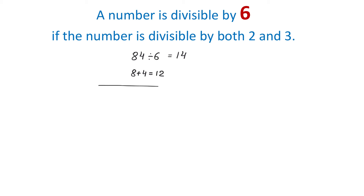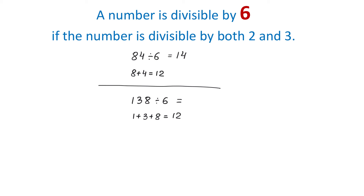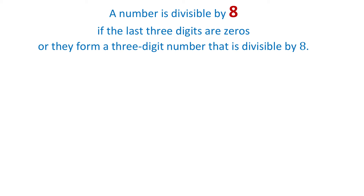Let's see one more example. The number 138 is divisible by 6 because this number is divisible by both 2 and 3. This number is divisible by 2 because it ends with 8. And it is also divisible by 3 because the sum of the digits 1, 3, and 8 gives us 12, and 12 is a number that is divisible by 3. Therefore, 138 is divisible by 6 and the result is 23.